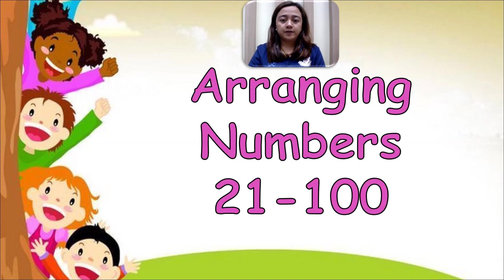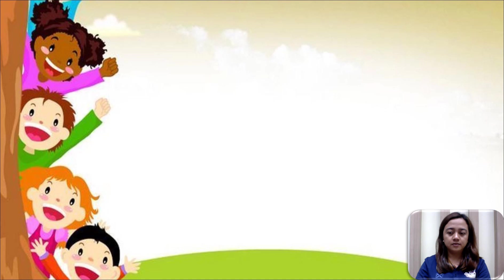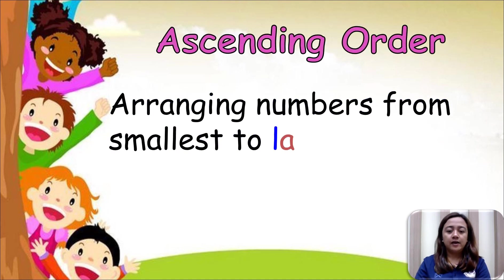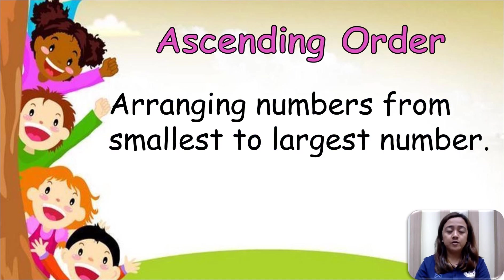Our topic is about arranging numbers 21 to 100. Ascending order means arranging numbers from the smallest to the largest number.